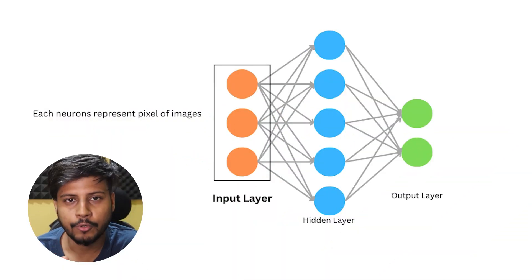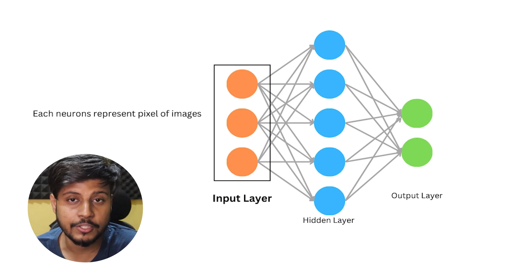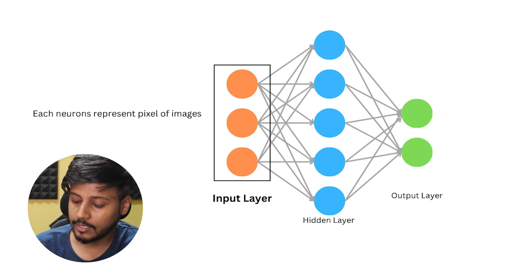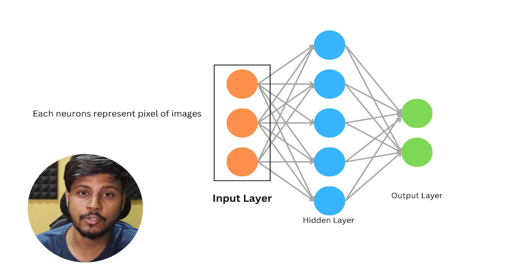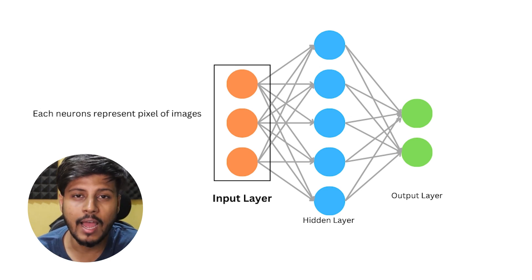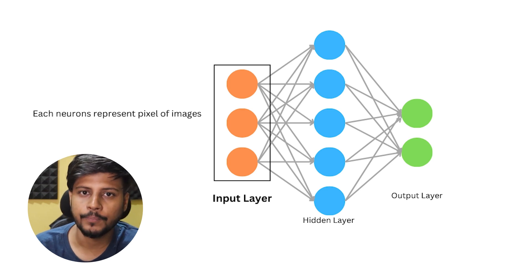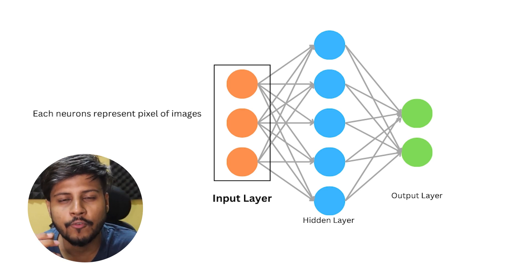In the input layer, each neuron represents a pixel in an image. In our case, this is an RGB image, so it will have a numerical value representing the intensity of red, green, and blue.